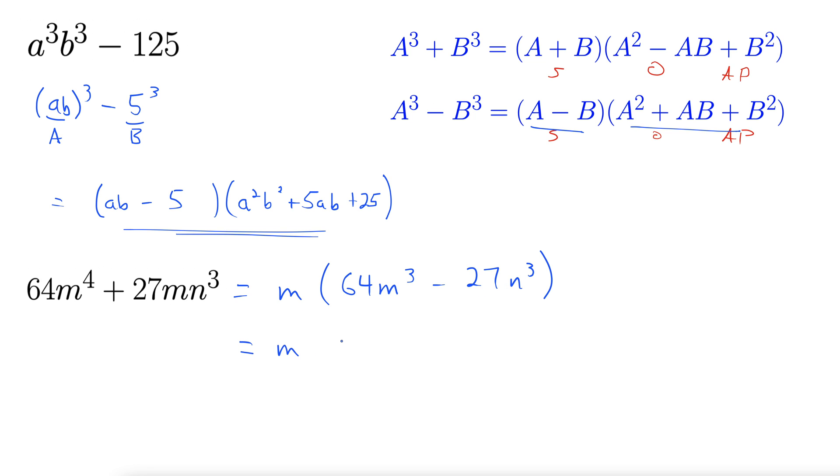I'm going to leave this m in front. We have to carry that all the way through. Sometimes it helps to rewrite these again. Instead of 64m³, we can write this as (4m)³ - (3n)³. That's completely optional; it just sometimes helps you see what's going on with your A's and B's.